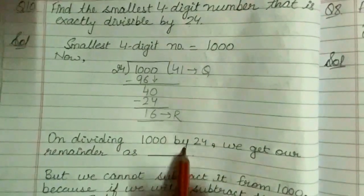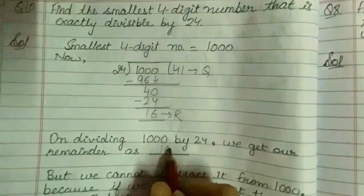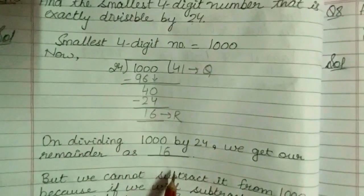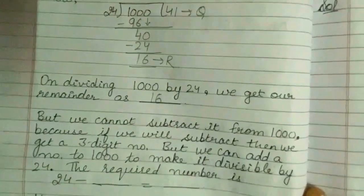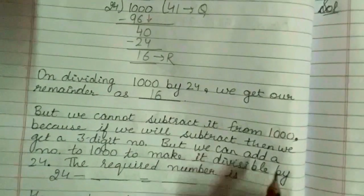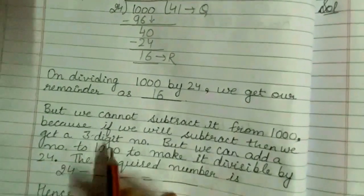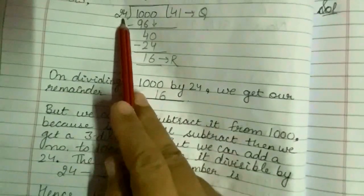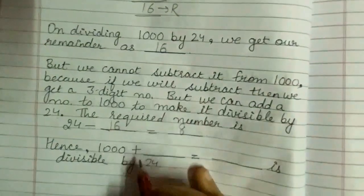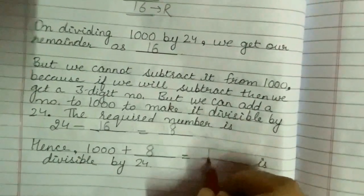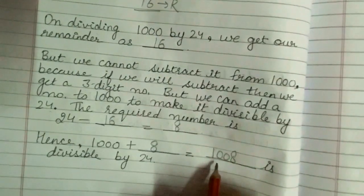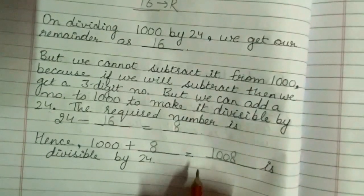On dividing 1,000 by 24 we get our remainder as 16. But we cannot subtract it from 1,000 because we want to find out the smallest 4-digit number, and if we subtract this from 1,000 we will get a 3-digit number. So we can add a number to 1,000 to make it divisible by 24. To find that number, subtract 16 from 24: 24 minus 16 will give me 8. Hence 1,000 plus 8 equals 1,008, which is divisible by 24.